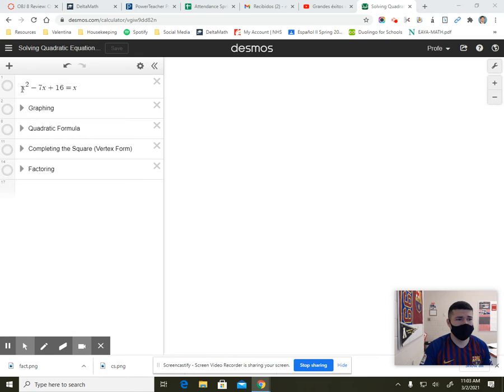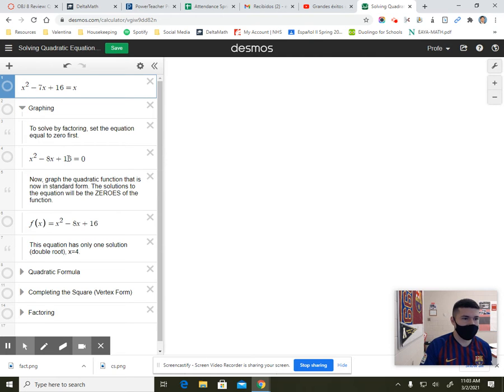First, we have this example: x squared minus 7x plus 16 equals x. You're going to see something consistent in all four of these methods, and the consistent part is always set your quadratic equation equal to zero. So let's start with graphing. We're going to subtract this x to the left side, and you're going to end up with negative 8x's. So in all these problems, you're going to see x squared minus 8x plus 16 equals zero.